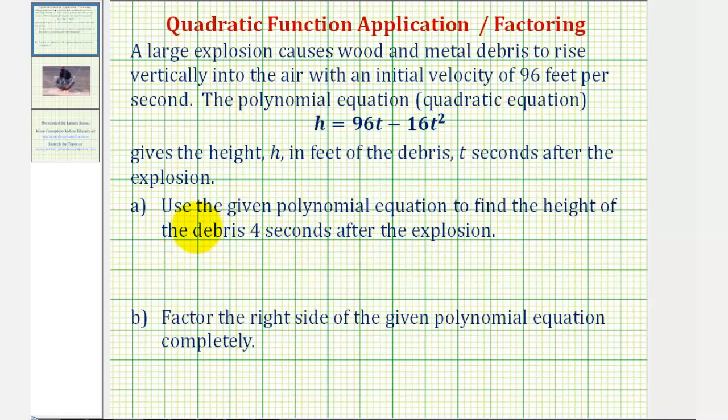So for part A, we want to find h when t equals four. So we'd have h equals 96 times four minus 16 times four squared. Well 96 times four is equal to 384.